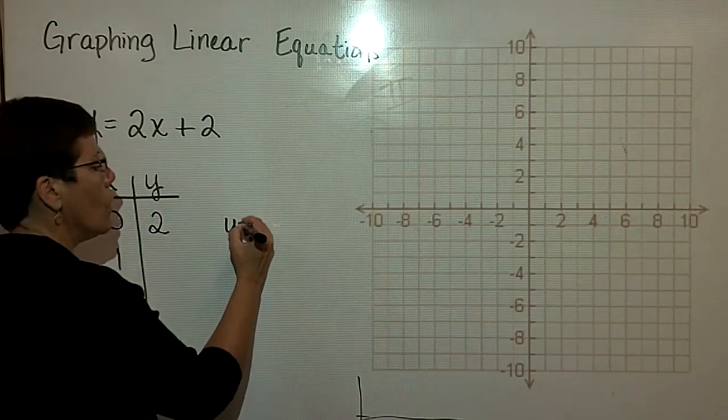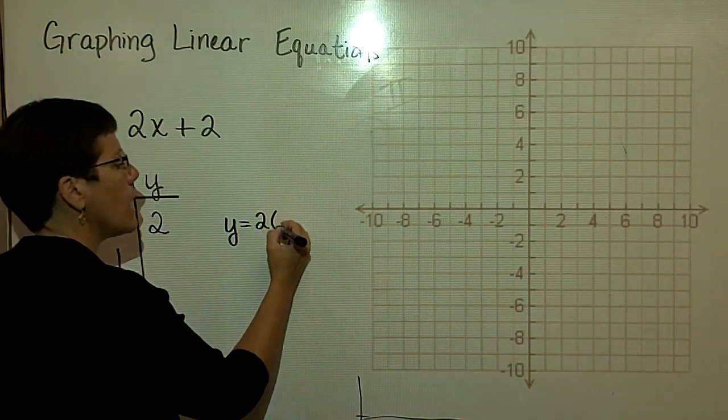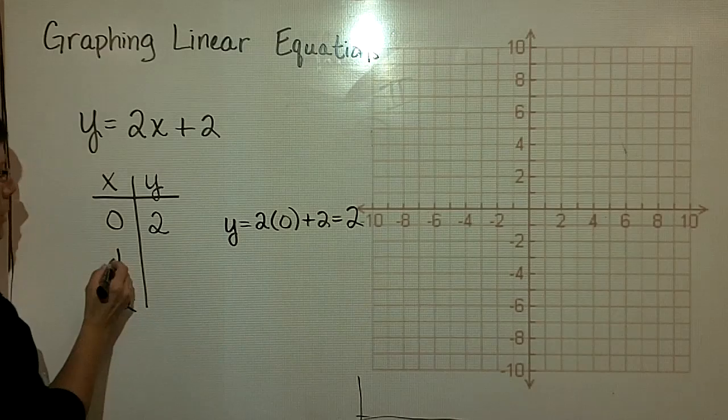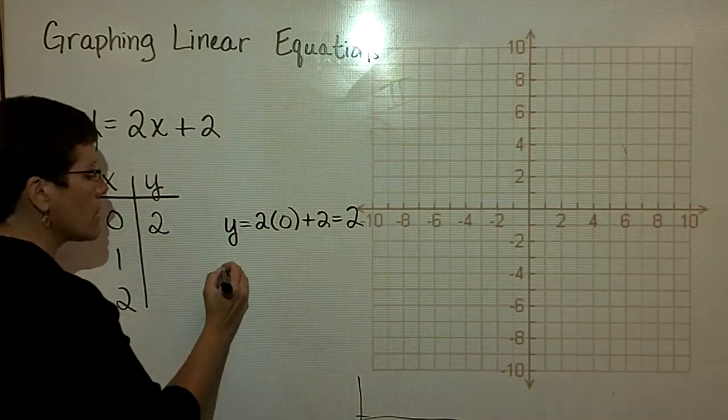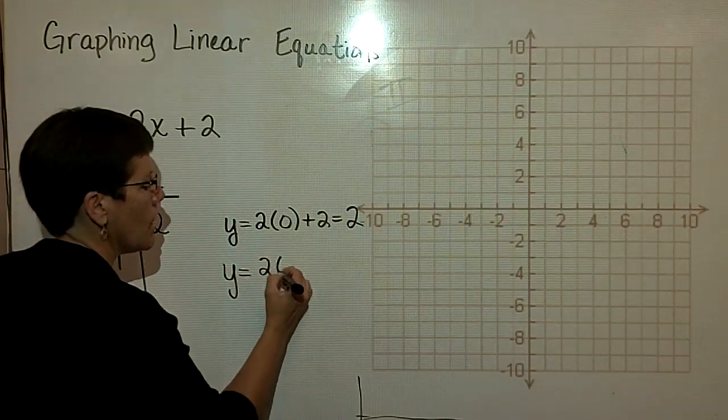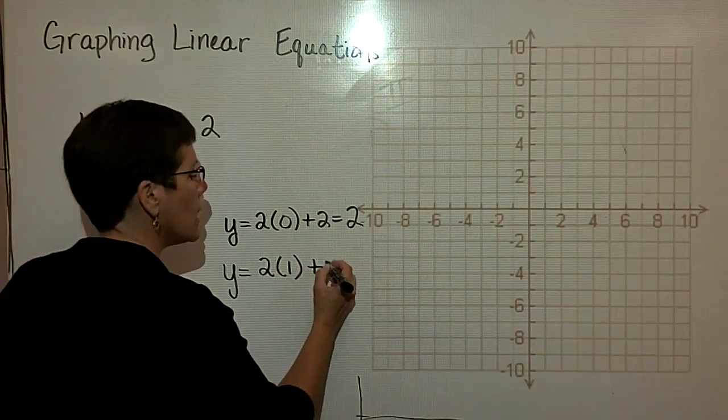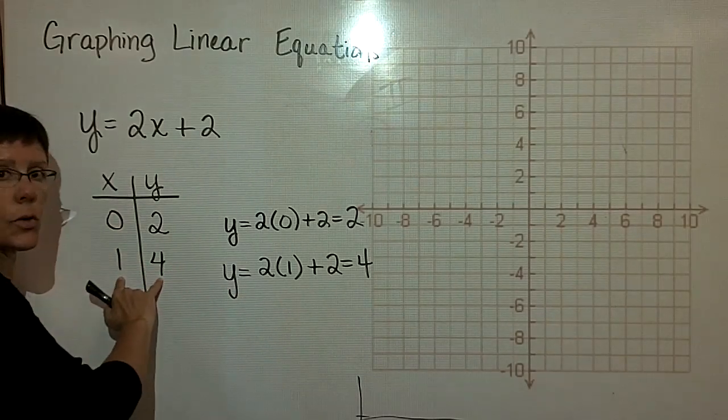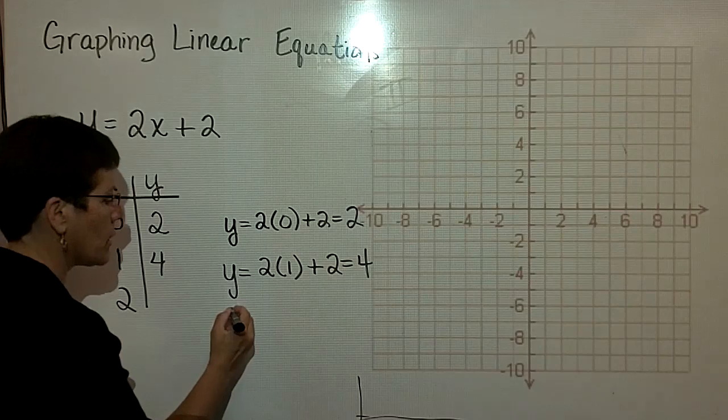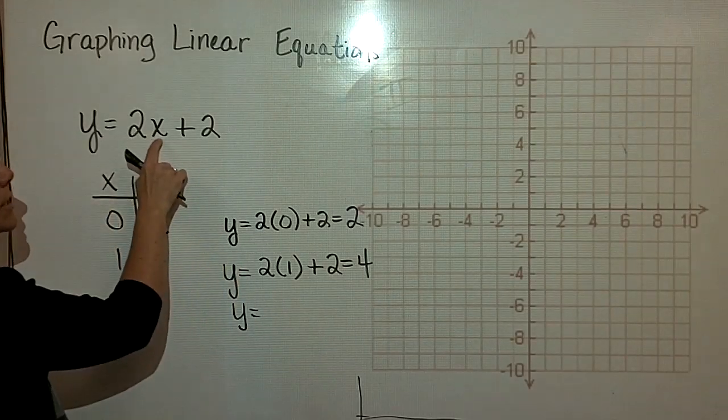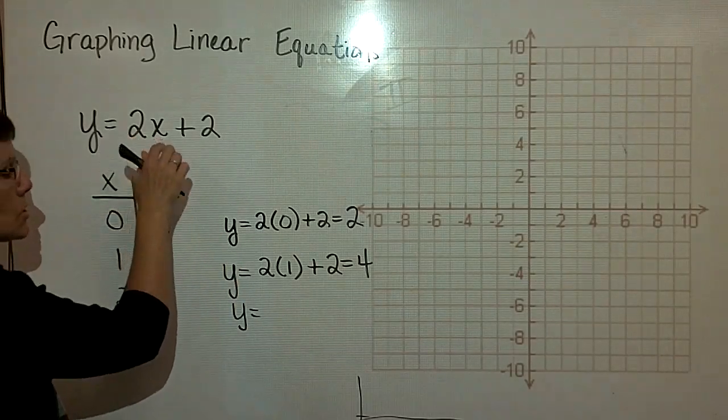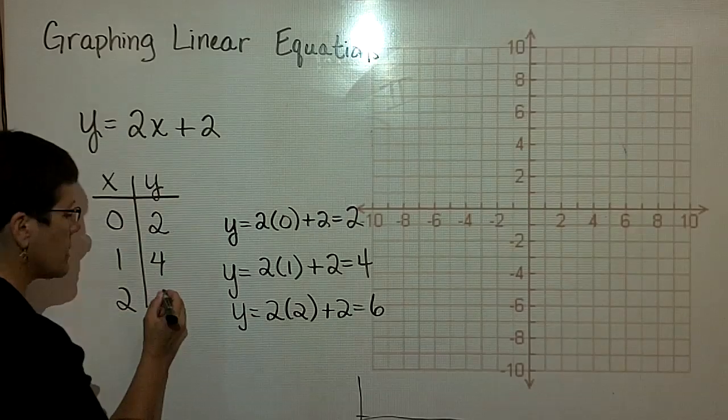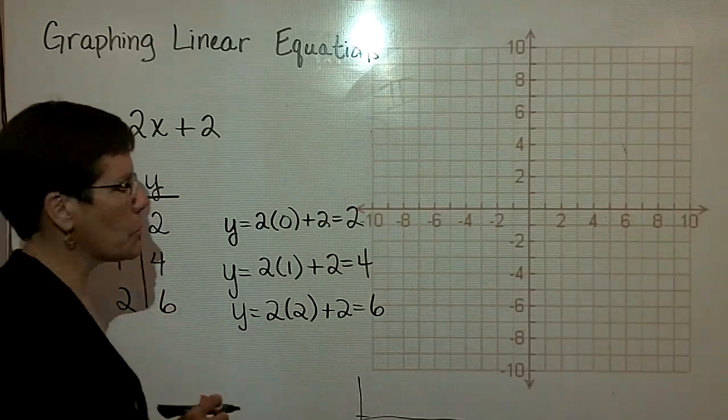I'm going to write this down. y is equal to 2 times whatever x is, and x is 0 in this case. 0 plus 2 is 2. When I put a 1 in here for x, I have y equals 2 times 1, which is 2, plus 2, which is 4. And there's the next ordered pair that works in this statement. When I put a 2 into this equation for x, I have 2 times 2, which is 4. And then I add that 2, so I get 6. And now I'm ready to plot those three ordered pairs.